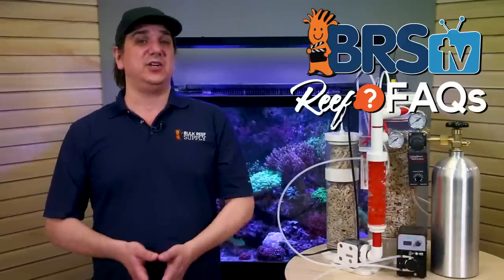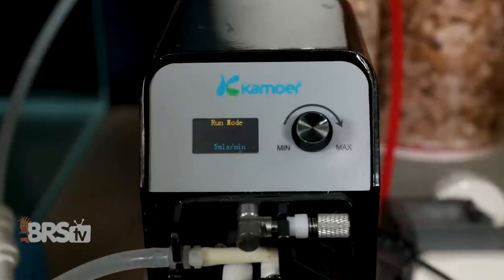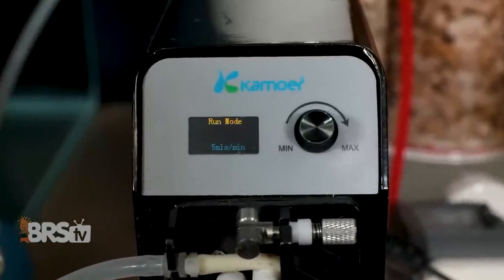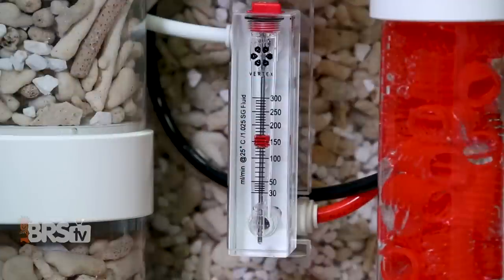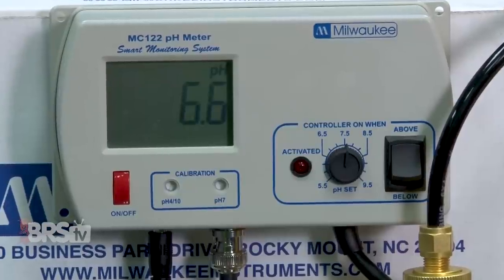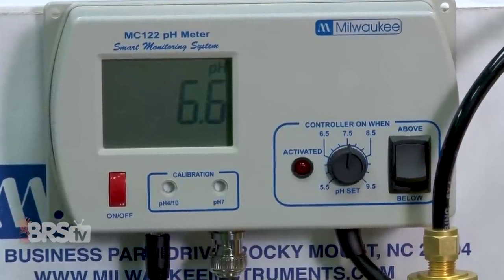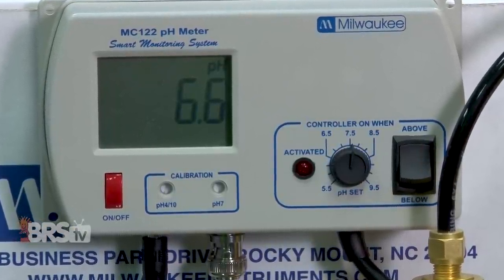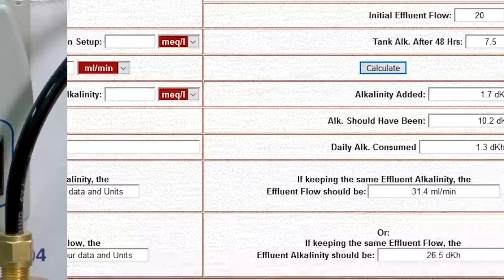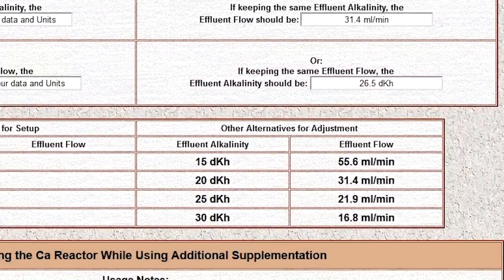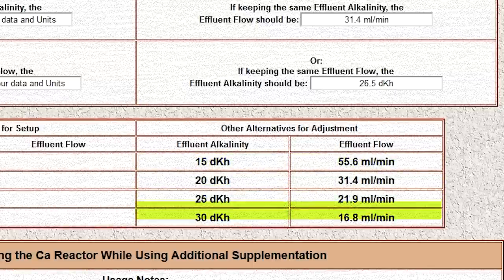Which of these two options you choose will depend on your reactor setup. If you have a continuous duty dosing pump or flow meter, it's probably easiest to adjust the flow rate and the amount of fluid dosed to the tank. If you don't have those but do have a pH controller on the reactor, changing the pH and the concentration might be easier. Below that, they show a variety of setups which will achieve the same desired result, ranging from an effluent concentration of 15 dKH at 55 milliliters a minute to 30 dKH at 16.8 milliliters a minute.